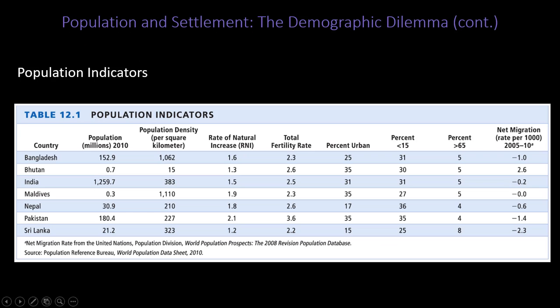Looking at population indicators — this is 2010 data — Bangladesh has about 150 million people. It doesn't sound like a lot of people, but when you look at how small the country is, you can see that the population density is quite, quite intense.